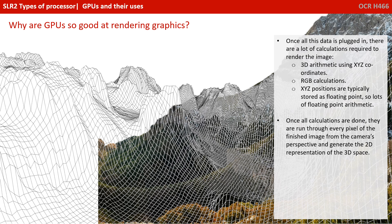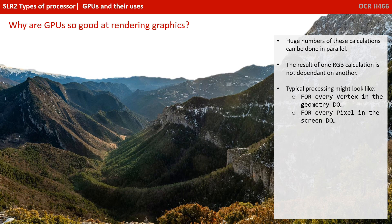Once all the calculations are done, they run through every single pixel of the finished image from the camera's perspective, and generate the 2D representation of the 3D space to display on a visual display unit. What we're talking about here is a huge number of calculations, many of which can be done in parallel. The result of one RGB calculation on a given pixel is not dependent on the results of any other.